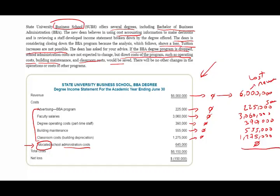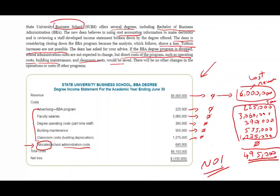Now we compute revenue minus expenses, ignoring the allocated differential cost. If we compute revenue minus the expenses we can actually eliminate, we find out that we are at a profit of 495. So should you close the school? The answer is no. By closing the school, you lose more revenue than you save in expenses. There could be other factors — the reputation of the school, or perhaps enrollment is low this year but will improve in future years. But strictly on accounting numbers, you should not close the school, because dealing with the business school itself, we are making a profit of 495.